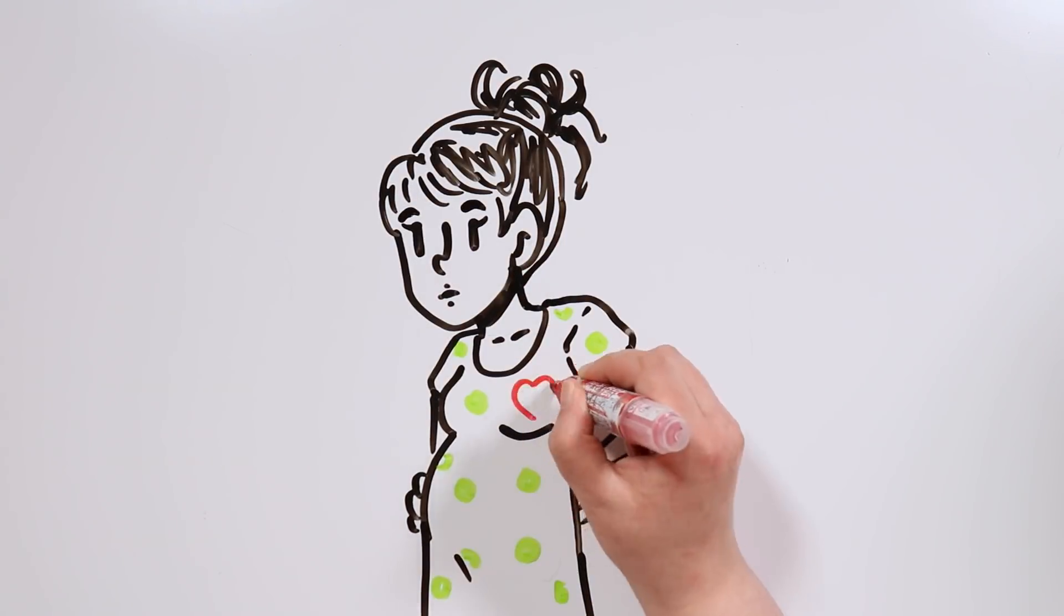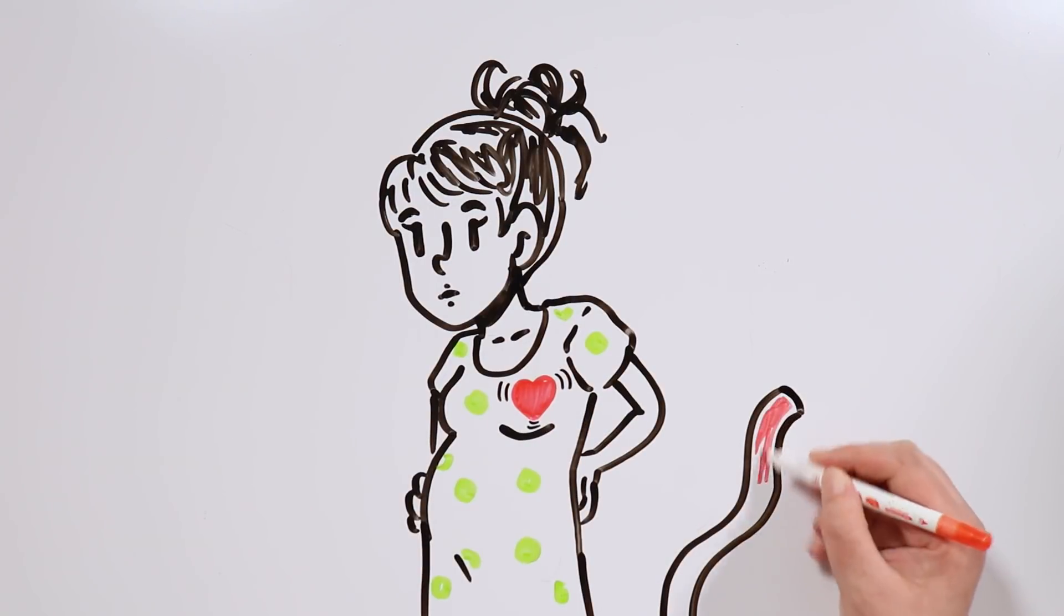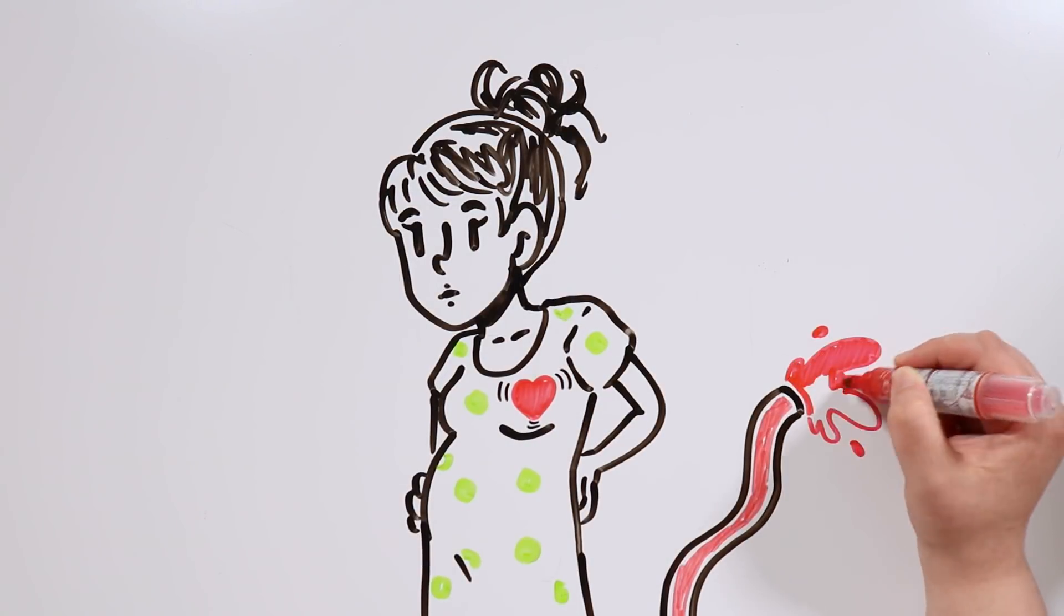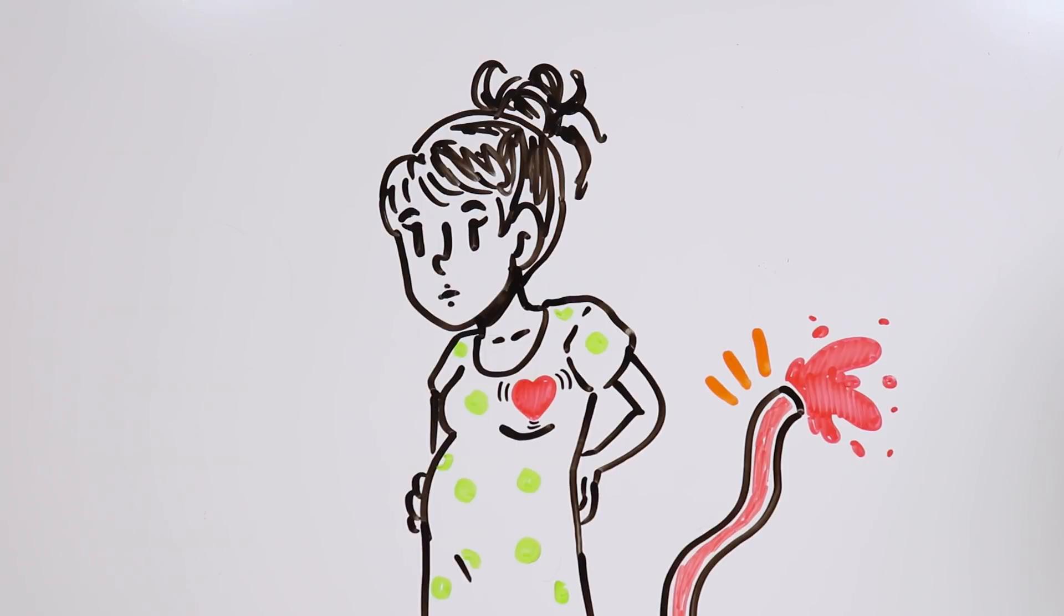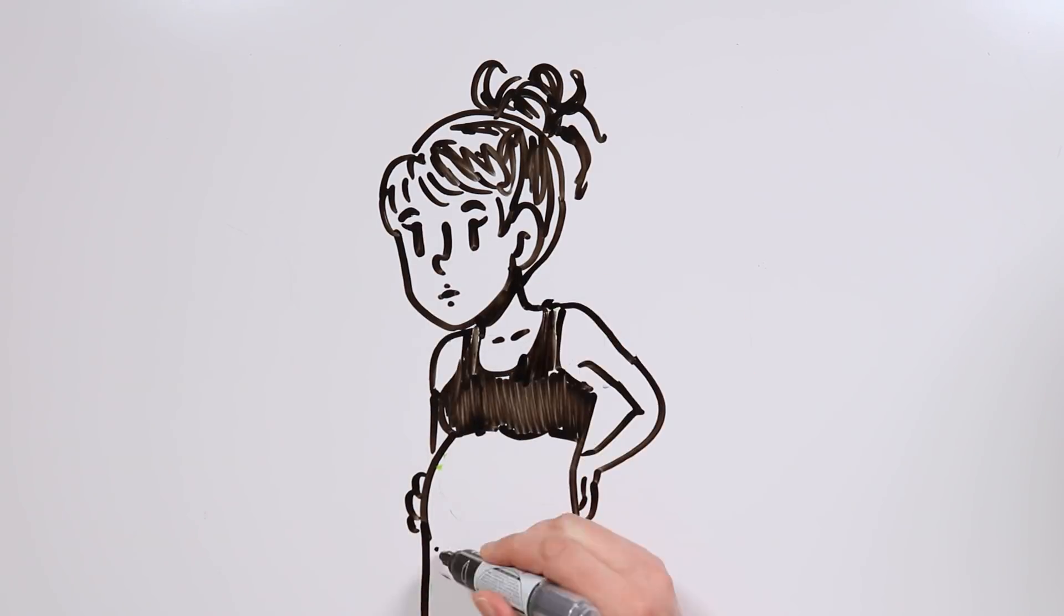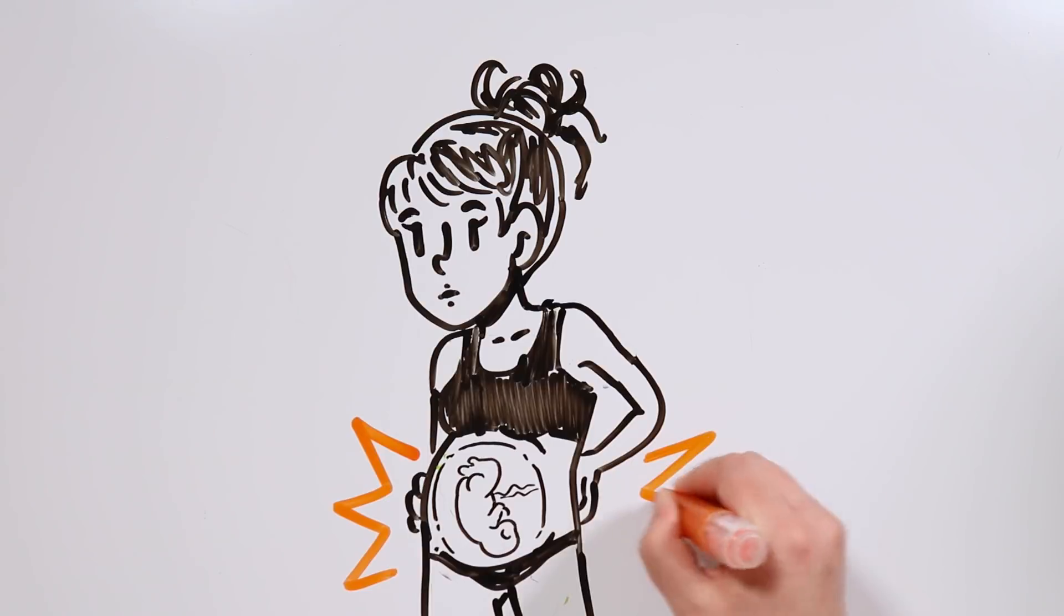The woman's heart also adapts to these changes. It will start beating faster, since it will need to pump more blood through the body. This is the stage when the baby usually turns upside down to get ready to come out.